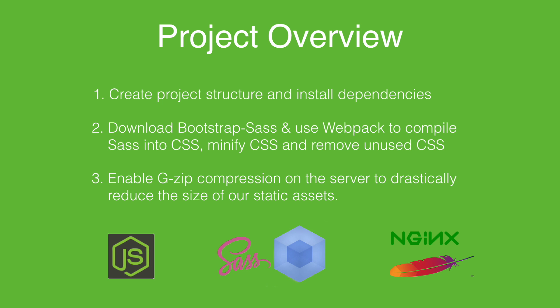We have a lot of work to do, but by the end of this project we should be able to get Bootstrap down to around 10 KB or less. We'll start off by creating the project structure and installing dependencies, namely Node.js. Once our project is set up, we'll download Bootstrap Sass and use Webpack to compile our Sass into CSS, and then use it to minify our CSS and remove any CSS selectors that we're not using.